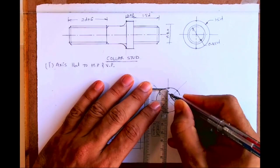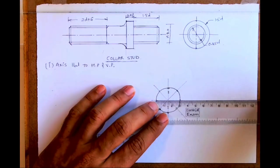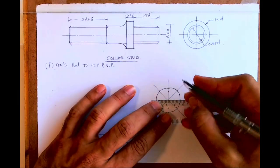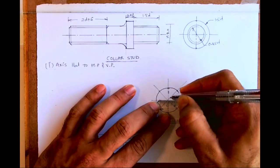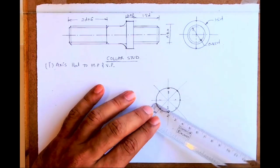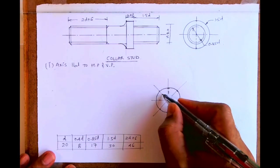Then inside one is 20, right? So take 10, 10. And then 0.85D is 17, so 8.5, 8.5. That way you can take three dimensions and you can draw freehand.